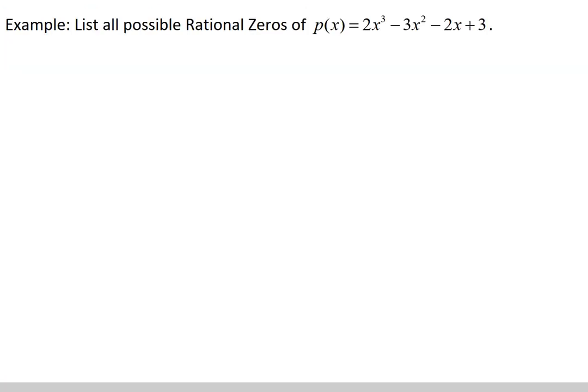Let's consider an example which says list all possible rational zeros of, and then here's our polynomial, p(x) equals 2x cubed minus 3x squared minus 2x plus 3.